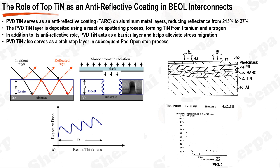The PVD-TiN layer is deposited using a reactive sputtering process, where a titanium target is bombarded with ions, causing titanium atoms to be ejected and react with nitrogen in the chamber to form TiN deposited on the wafer. The thickness of the TiN layer is critical — too thin and it may not adequately absorb incident light; too thick and it may introduce additional stress leading to defects. In addition to serving as an ARC, PVD-TiN also acts as a barrier layer preventing aluminum diffusion into the dielectric, and helps alleviate stress migration.